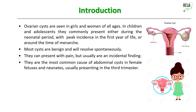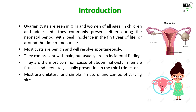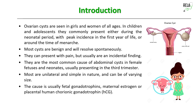These cysts usually present in the third trimester — when they are still in utero. Most of them are unilateral and simple in nature and can be of varying size. The cause is usually fetal gonadotrophins, maternal oestrogen, or placental human chorionic gonadotrophin stimulation.